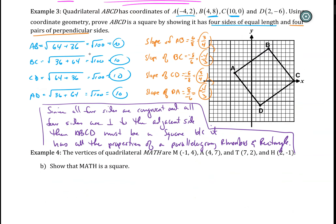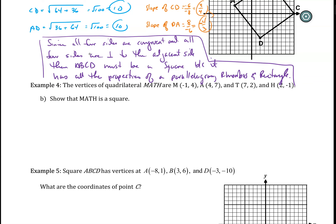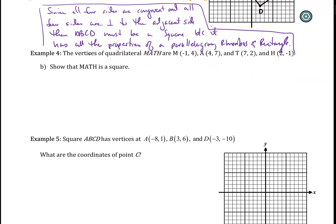Number four is the same type of question, left as open-ended practice. I would personally recommend using a midpoint formula to show the diagonals bisect each other, then slopes to show opposite reciprocals confirming the diagonals are perpendicular, and then the length of the diagonals to show they are also congruent. That would be enough to show that it's in fact a square.